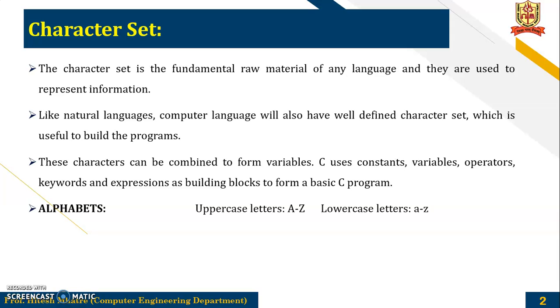In this we can have alphabets in uppercase, that is A to Z, and in lowercase a to z. Then digits starting from 0 up to 9 and the special character. So these are the symbols that we can have as a character set in C.